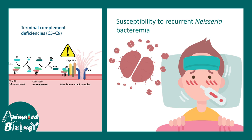There are other deficiencies such as terminal complement deficiencies, where the proteins C5 to C9 could be deficient. This increases the susceptibility to Neisseria bacteremia. For any of these complement deficiencies, there is a common theme: recurrent bacterial infection. These proteins are necessary to kill bacteria, and when there is a deficiency, there is obviously more chance of bacterial infection.